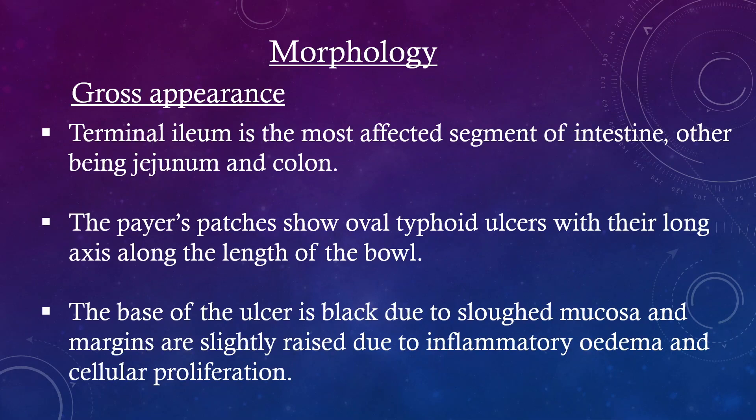Morphology. Gross appearance. Terminal ileum is the most affected segment of intestine, others being jejunum and colon. The Peyer's patches show oval typhoid ulcers with a long axis along the length of the bowel. The base of the ulcer is black due to sloughed mucosa, and margins are slightly raised due to inflammatory edema and cellular proliferation.